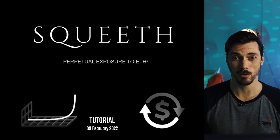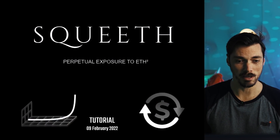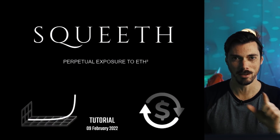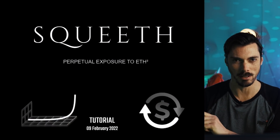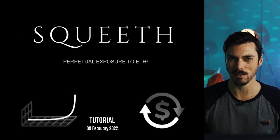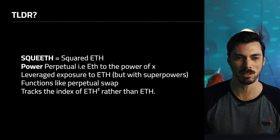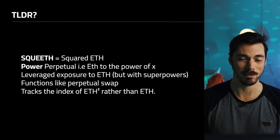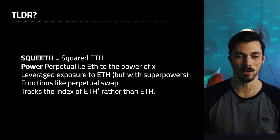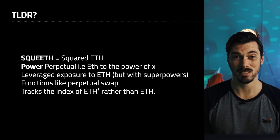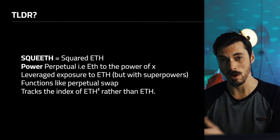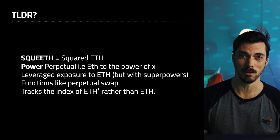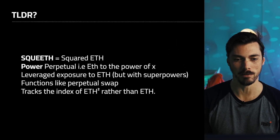So here it is — Squeeth from Opyn. It's perpetual exposure to ETH squared. Squeeth is squared ETH. It's a power perpetual and that means it's ETH to the power of x. In this case it's ETH squared, ETH to the power of 2.